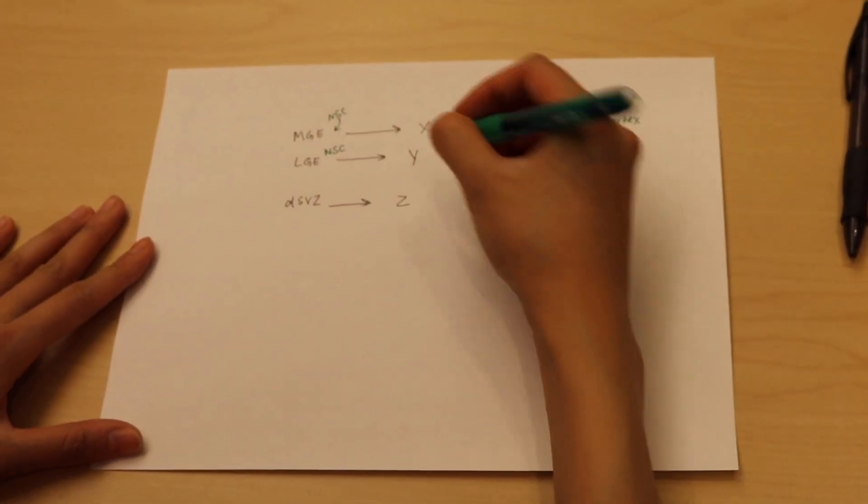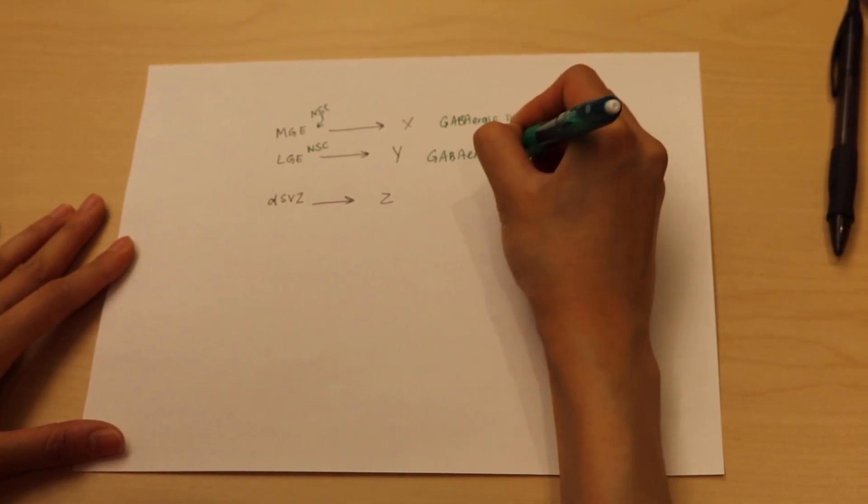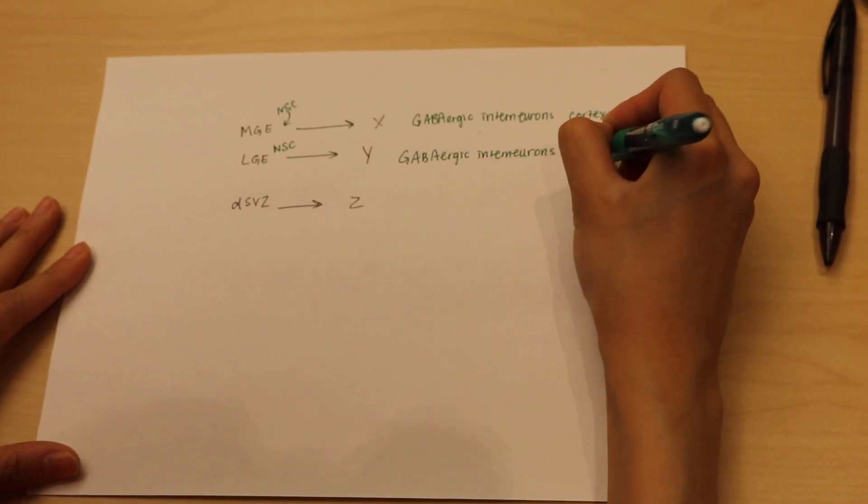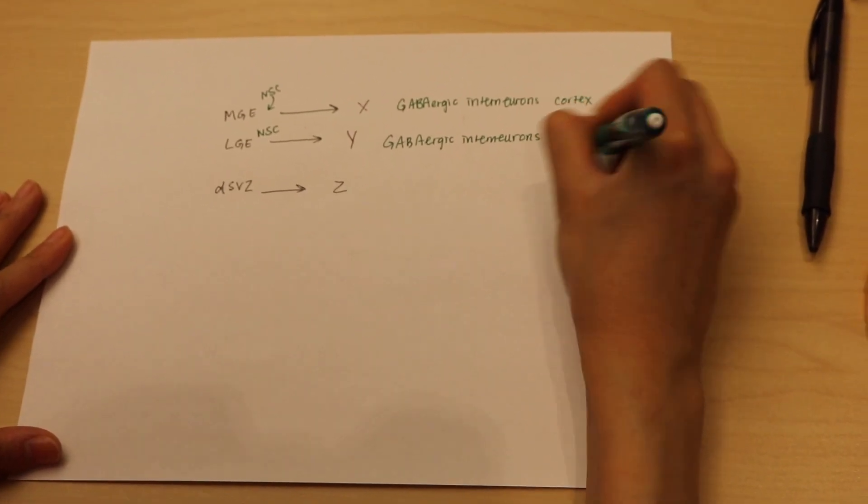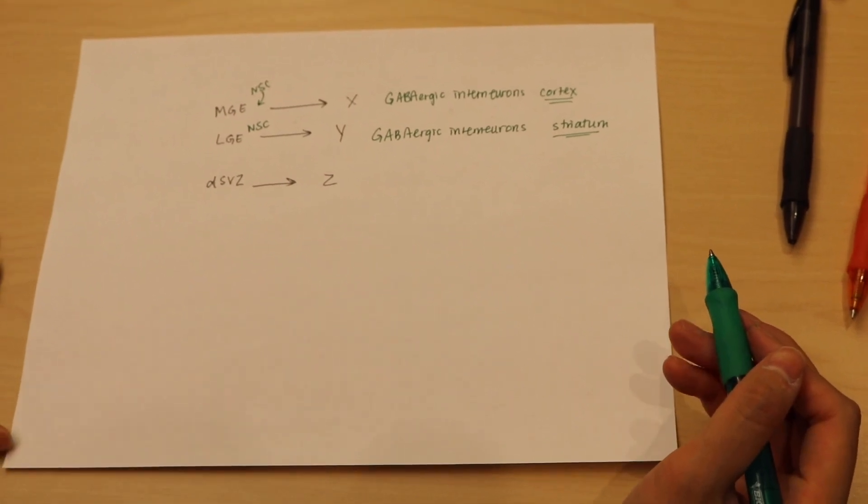The lateral ganglionic eminence here—these neural stem cells will also form GABAergic interneurons. However, these interneurons will migrate to the corpus striatum, another structure that eventually becomes the basal ganglia of our adult brain.